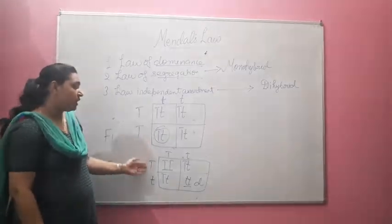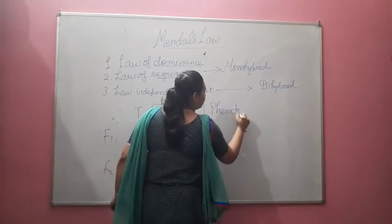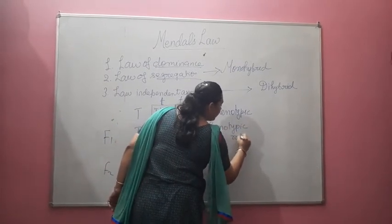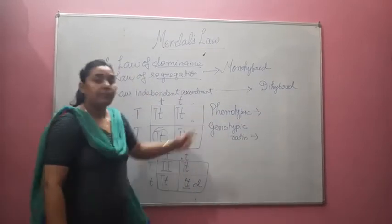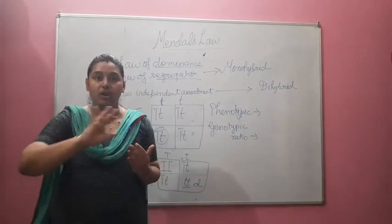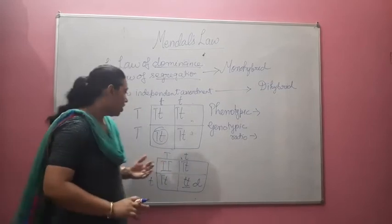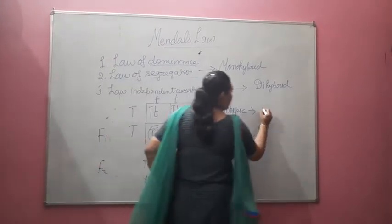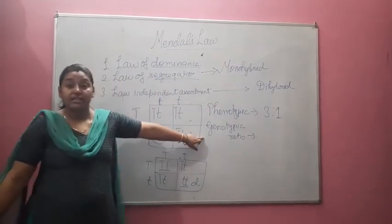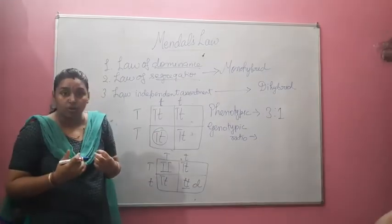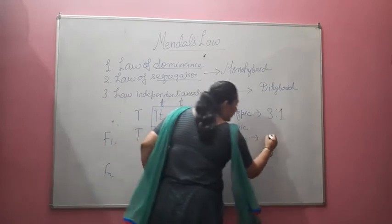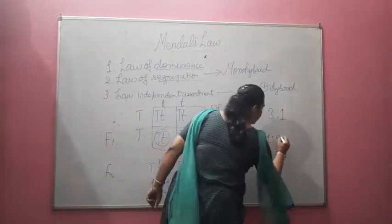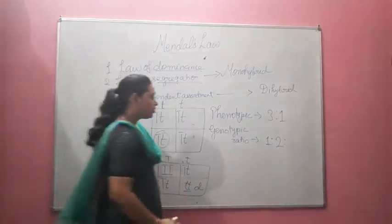There are two types of ratios in our output. One is called phenotypic and the other one is called genotypic. Phenotypic ratio means whatever is externally visible — on that basis the ratio you get. In this F2 generation you observe that three are tall and one is dwarf, so the phenotypic ratio is 3:1. The genotypic ratio, looking at the genes inside, is 1 pure tall : 2 carrying both tall and dwarf gametes : 1 completely dwarf, which is 1:2:1.